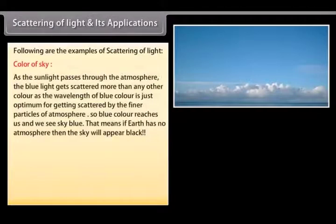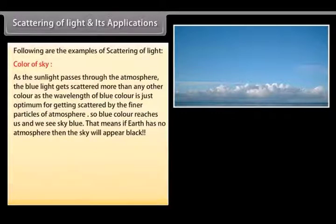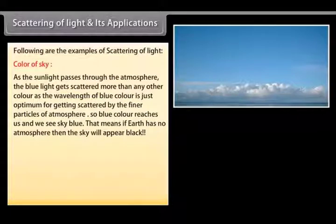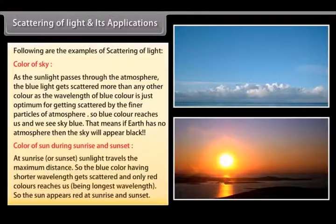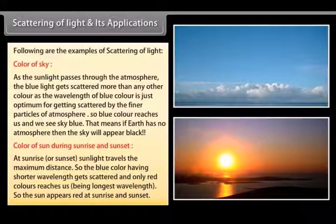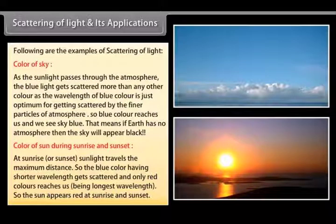Applications of scattering: As sunlight passes through the atmosphere, blue light gets scattered more than any other color because its wavelength is just optimum for scattering by finer particles of the atmosphere. So blue color reaches us and we see a blue sky. If Earth had no atmosphere, the sky would appear black. At sunrise or sunset, sunlight travels the maximum distance, so blue color with shorter wavelength gets scattered away and only red color, having the longest wavelength, reaches us — making the sun appear red at sunrise and sunset.